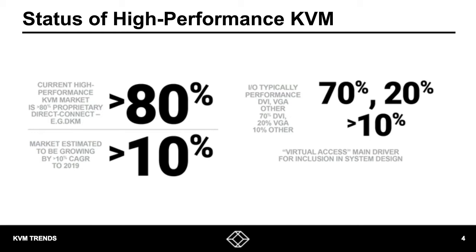The market for high-performance KVM is growing strongly, estimated at 10 to 11% annually over the next three to four years. People are connecting their KVM systems to workstations and servers, so naturally the I/O on KVM systems has evolved to support the latest video and USB standards. Today, about 70% of connections are to DVI-based systems, approximately 20% to VGA-based, and 10% to others including DisplayPort and HDMI.